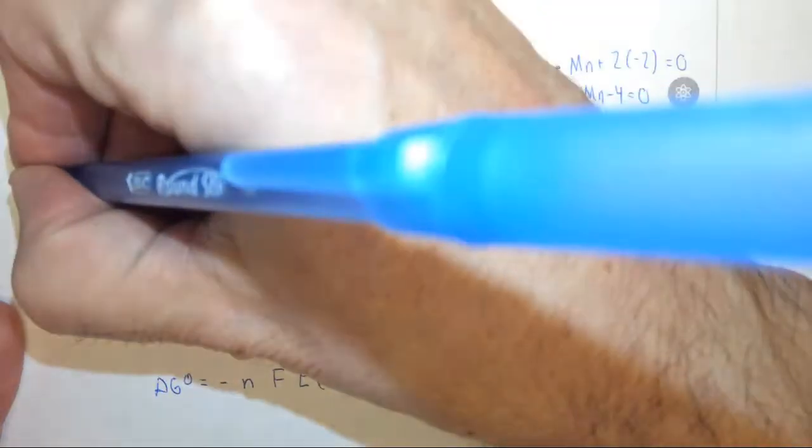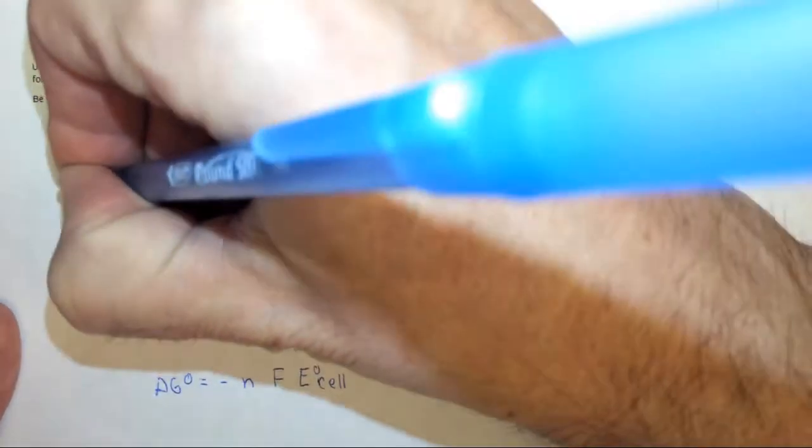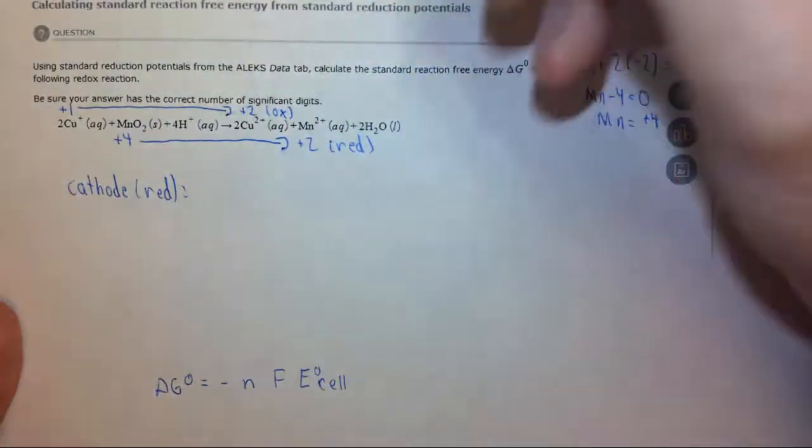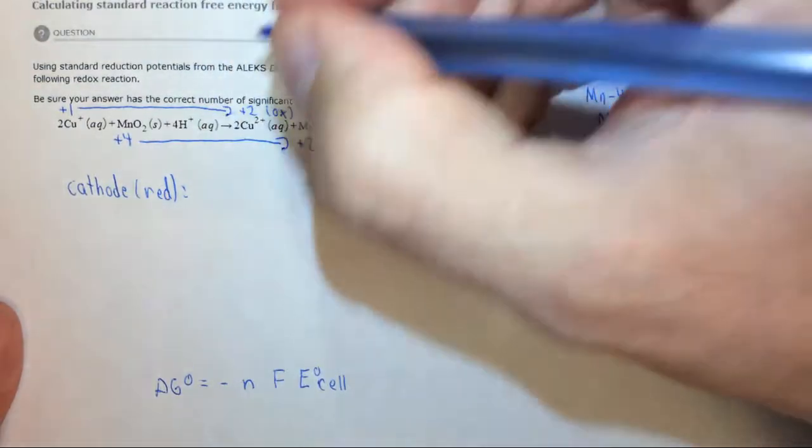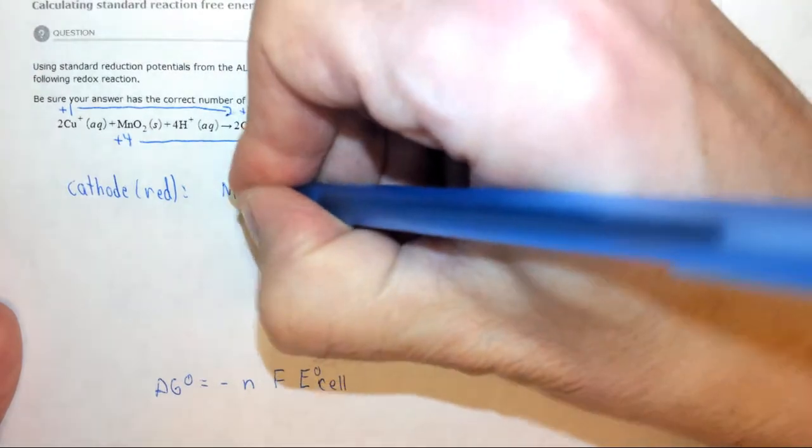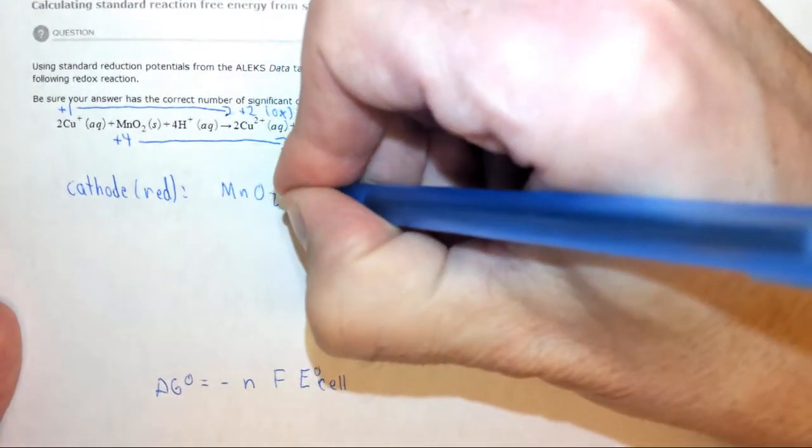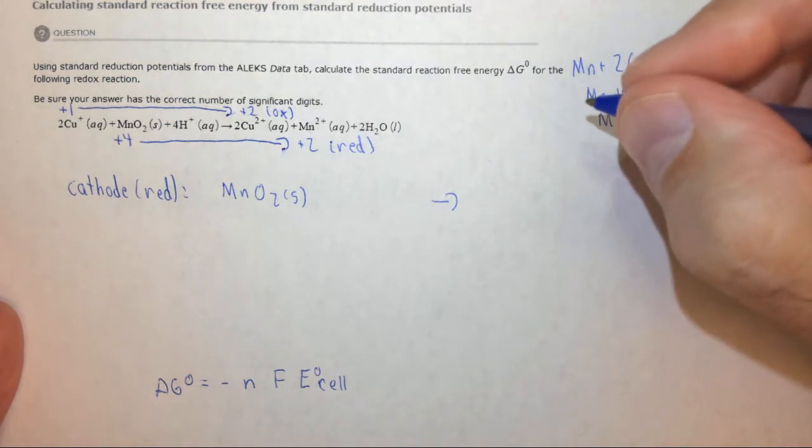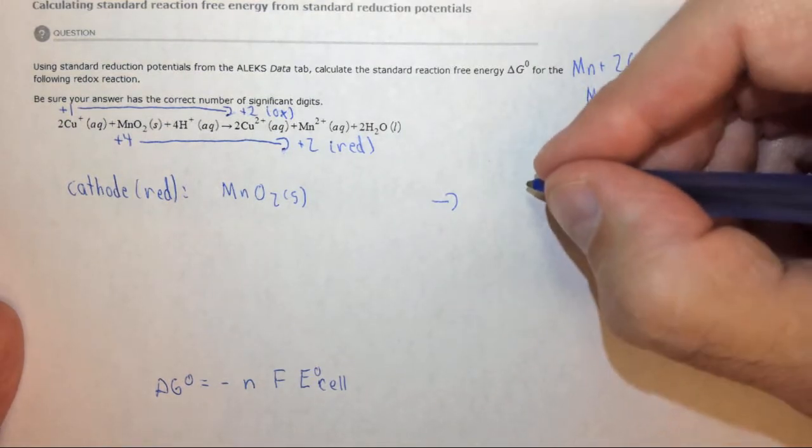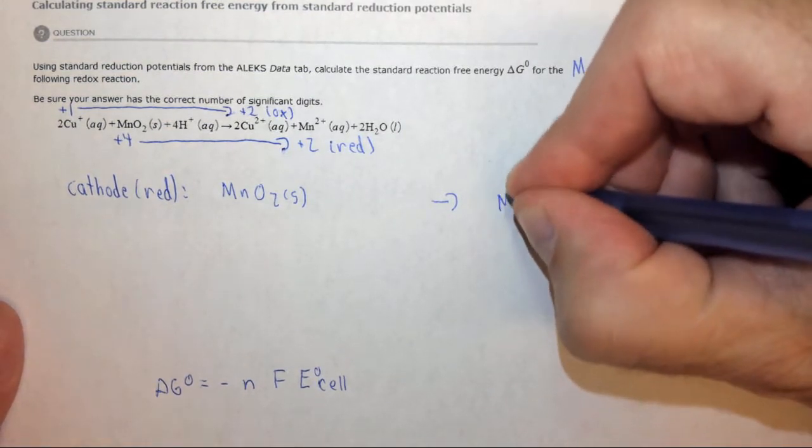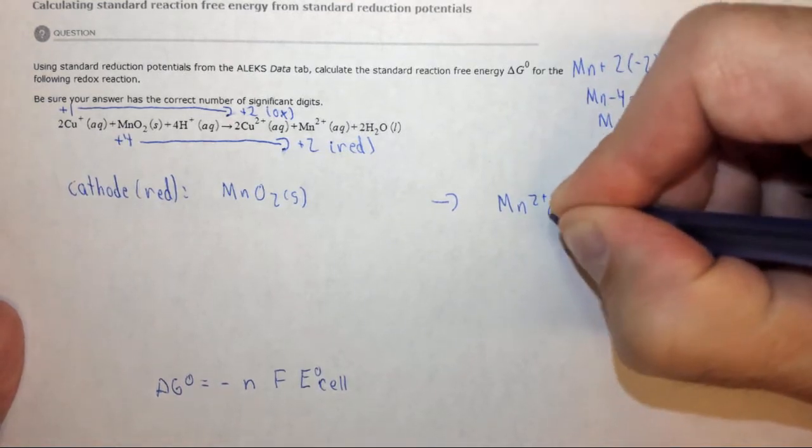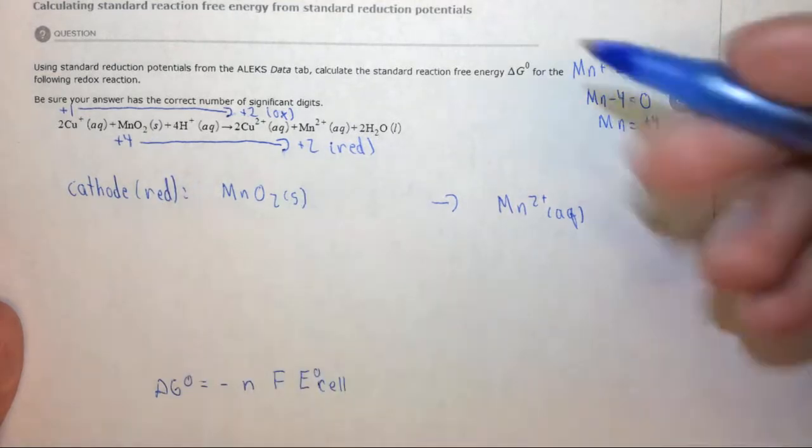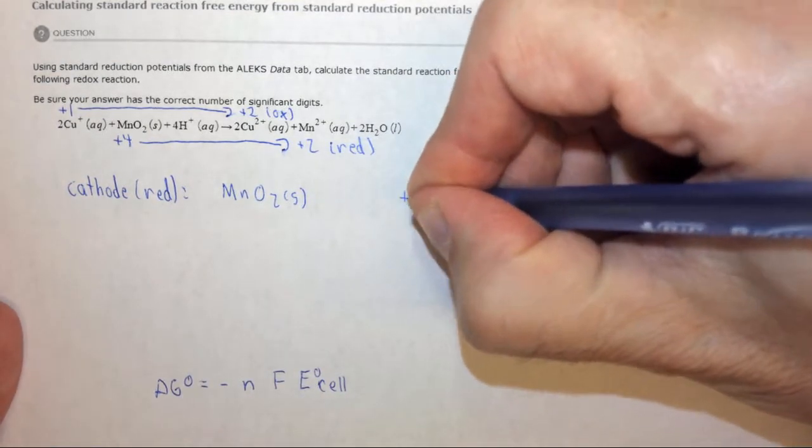So let's look at the cathode first, and of course at the cathode we have reduction occurring. In this case we have MnO2 solid, and it's going to yield Mn2+ aqueous. And to get this to occur we have two electrons, so I'm going to put two electrons here.